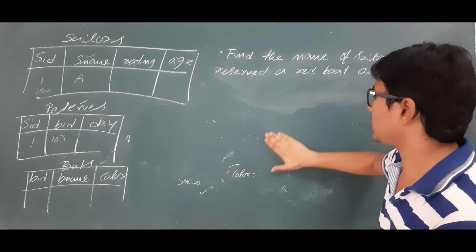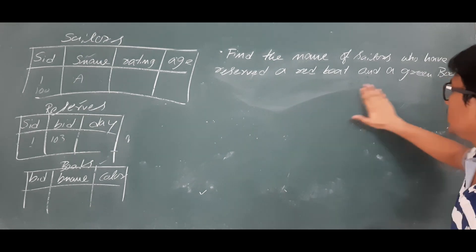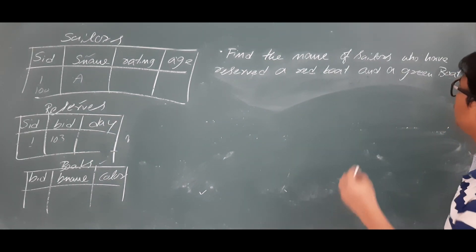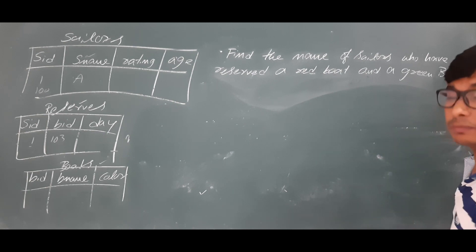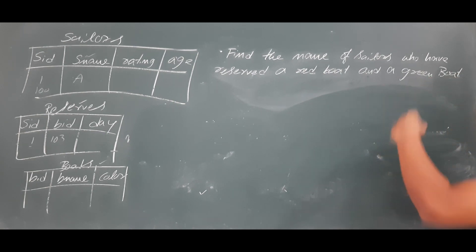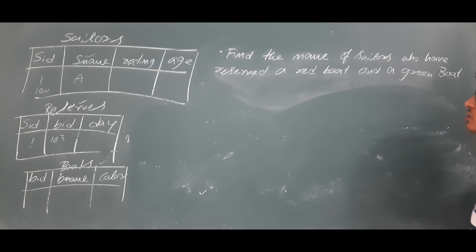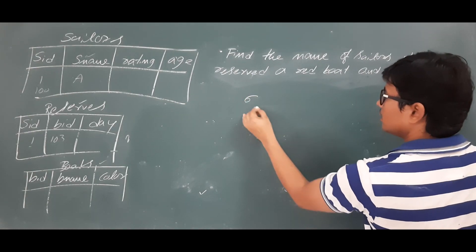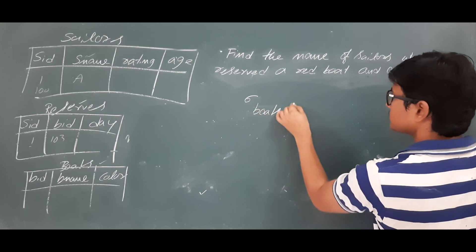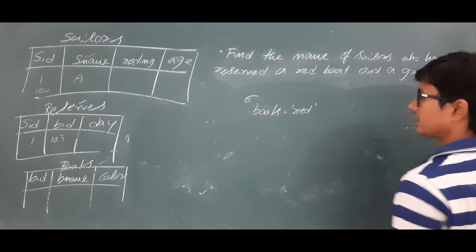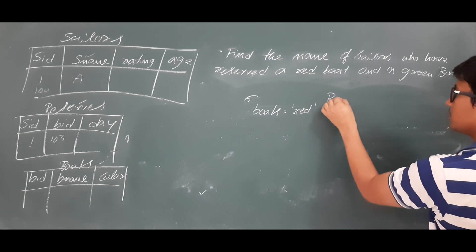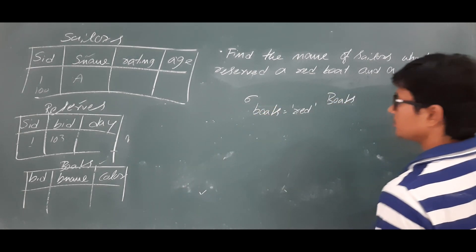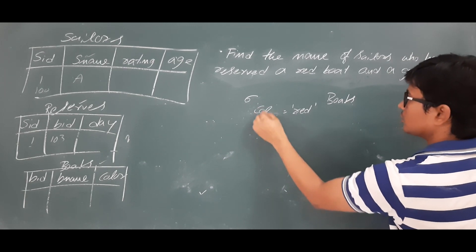Now let's discuss how to write the correct relational algebra expression for this query. We need to find the name of sailors who have reserved a red boat AND a green boat — not a single boat with both colors. First, I will identify the boats which are in red color.